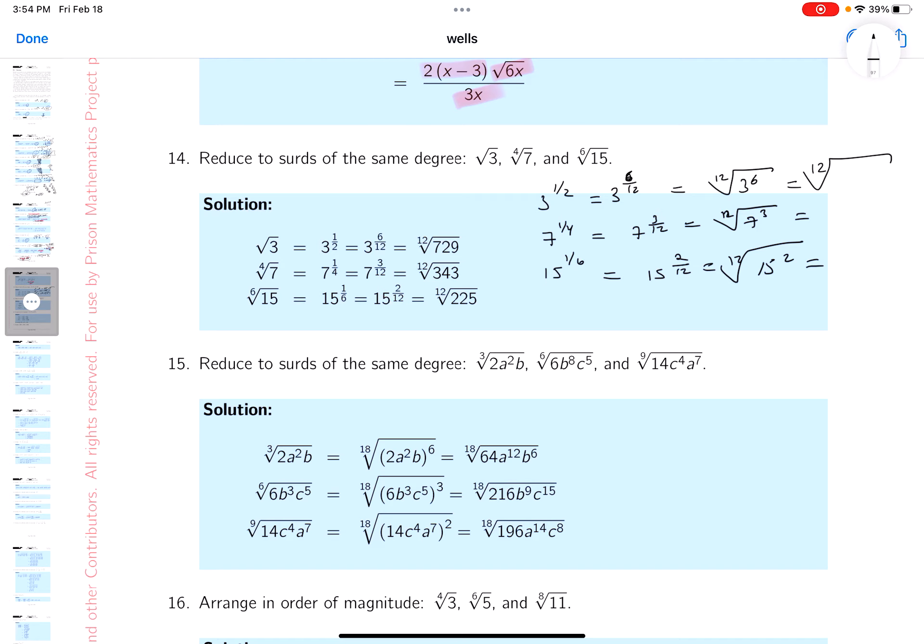3 to the 6th, let's see that would be 81 times 81. Let me put this on the side. You'd get 81, one times 81 is 81, then you get 8 times 1 is 8, 8 times 8 is 64.